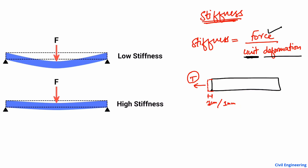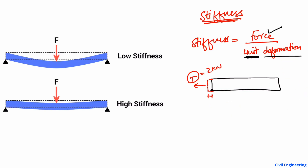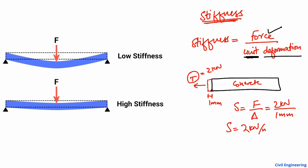For example, if I apply a force of 2 kilonewtons to produce one millimeter of deformation in a concrete rod, then my stiffness will be equal to the force divided by the unit deformation delta. So force is 2 kilonewtons divided by deformation of 1 millimeter — the stiffness of this material is 2 kilonewtons per millimeter. It means 2 kilonewtons of force is required to produce 1 millimeter of deformation.